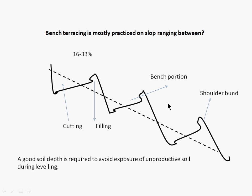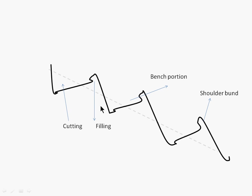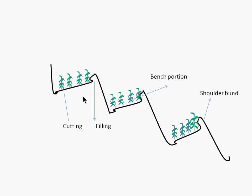If unproductive soil is exposed, then in that area we cannot take cultivation of the crop because crop production will be hampered. After that it will look like this, and in between this area we can take the crop. So we will intensify the hilly and undulated area by this bench terracing process — this is ultimately our aim, to intensify the hilly area. This is essentially a soil engineering process.